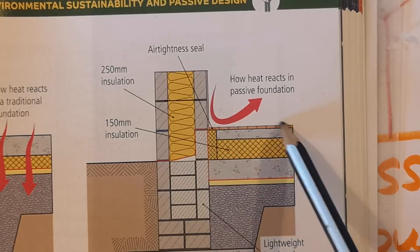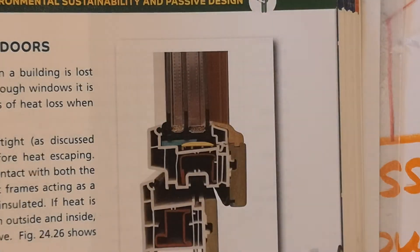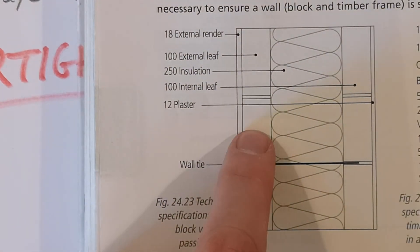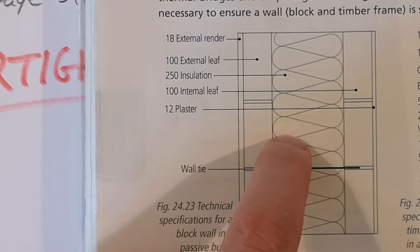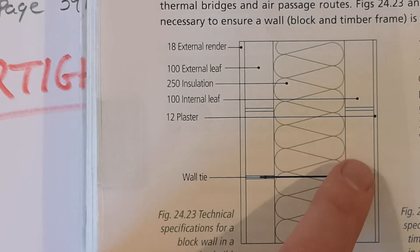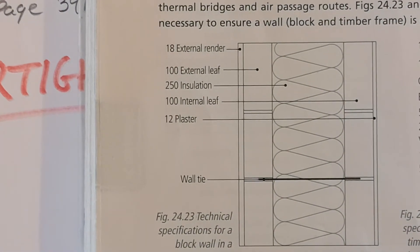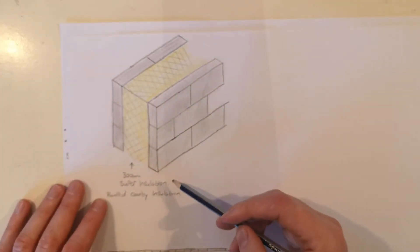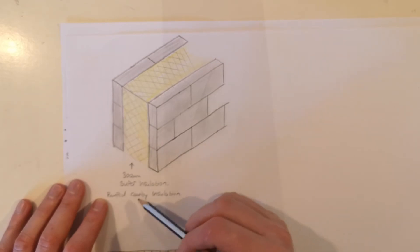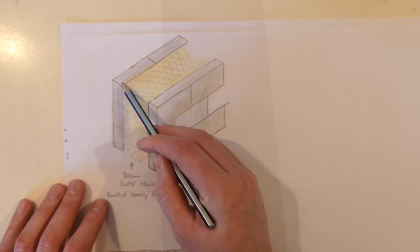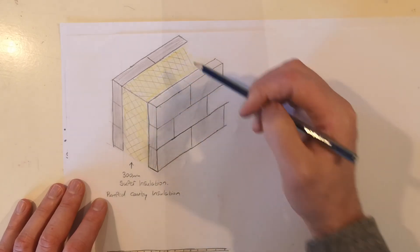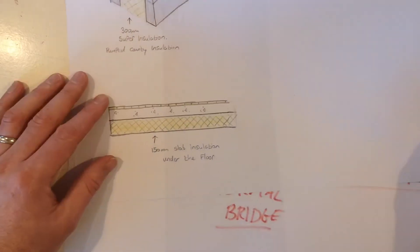Also do a quick sketch with your external leaf, your large cavity with 300 millimeter insulation, and your internal leaf — a sketch of that as well, nice and simple. Here's a very simple sketch of the 300 millimeter super insulation — it's pumped cavity insulation. You've got your inner leaf, your outer leaf or concrete block, the extra large 300 millimeter cavity, and it's pumped full of insulation.